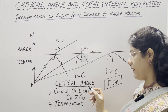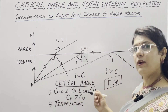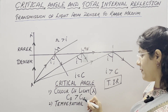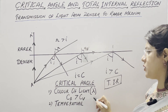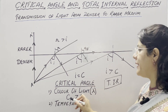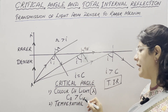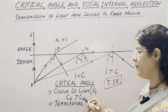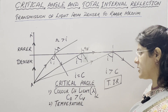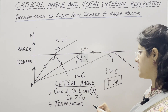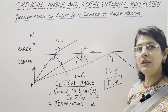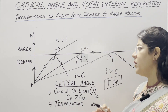Factors affecting the critical angle: first is color of light or wavelength λ. The wavelength of violet color is least — 4000 Angstrom — and red is 8000 Angstrom. So the critical angle for red color is more than for violet color for a given pair of media — directly proportional. Second factor is temperature: if temperature increases, critical angle also increases — also directly proportional.